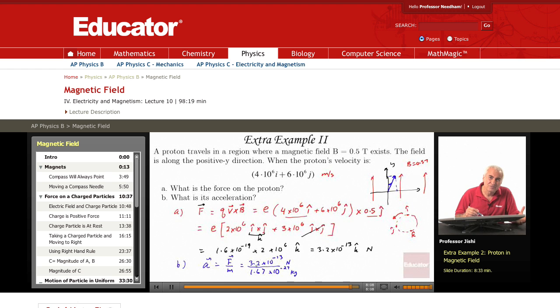So we get about 2 times 10 to the 14 meters per second squared, and it's in the plus z direction because the force is in the plus z direction.